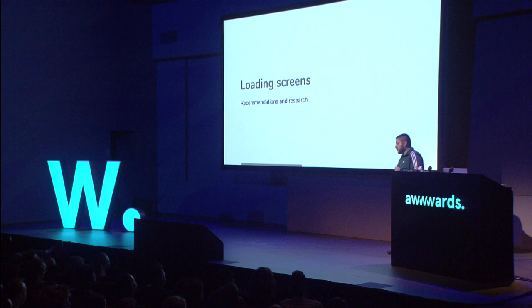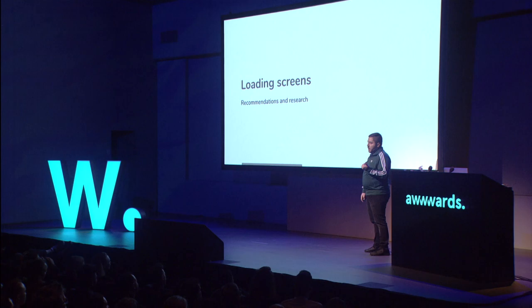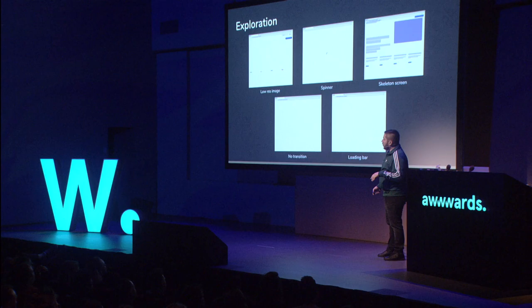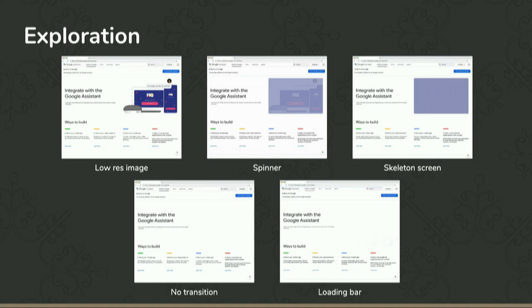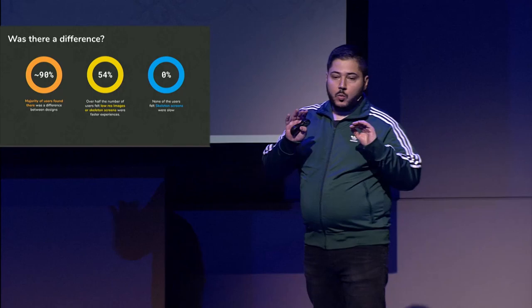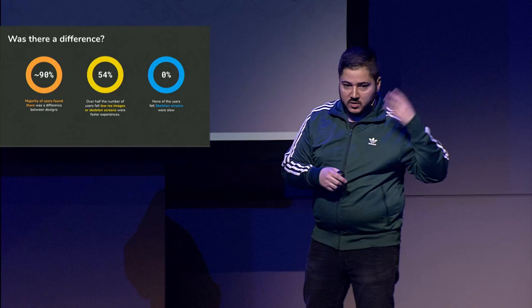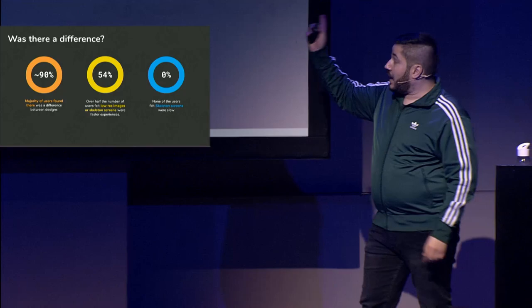I've done a lot of research on loading screens. Late last year I did a study on our documentation sites comparing how people perceive different loading patterns: a low pixel image replaced by a high quality one, a spinner, a skeleton screen, no transitions whatsoever, and a loading bar. We found 90% of users do notice an actual difference. The majority prefer content placeholders — they find it makes the experience feel faster. The skeleton screen received no votes for being slow.